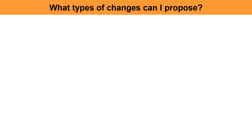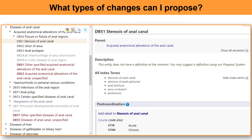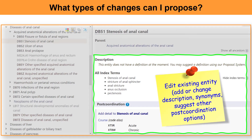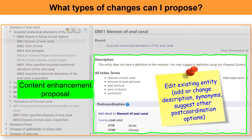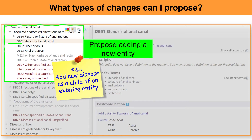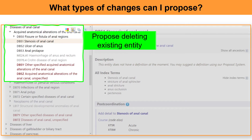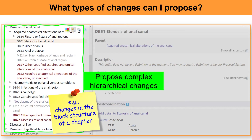What other types of changes can we propose? If you want to edit an existing entity by adding or changing something in a definition or in the synonyms, or suggesting other post-coordination options, this is called a content enhancement proposal. You may propose adding a new entity, like adding a new disease as a child under an existing entity, or propose to delete an existing entity. A more complex proposal would be proposing complex hierarchical changes, like changes in the block structure of a chapter. However, these last three types of proposals have become a lot less common now that ICD-11 has become more developed.